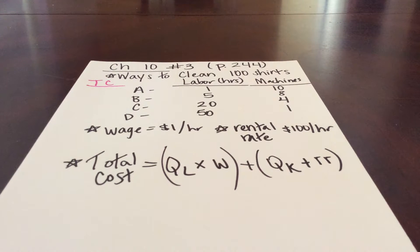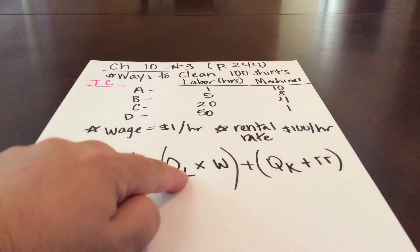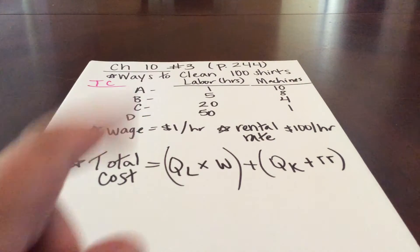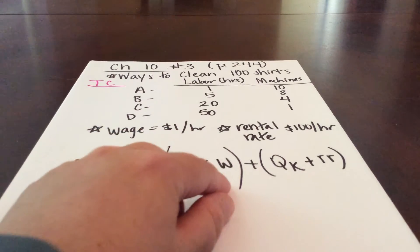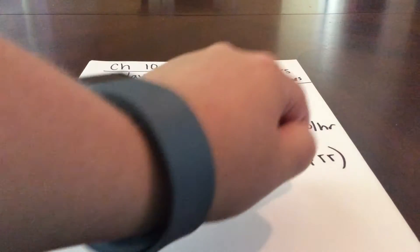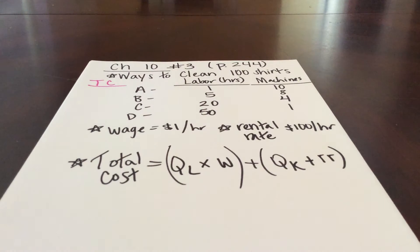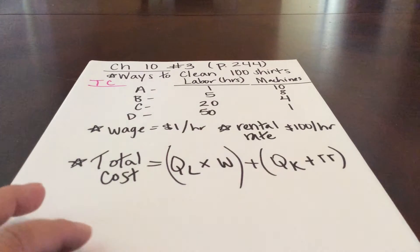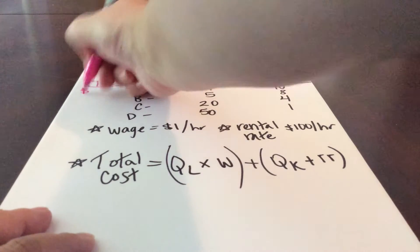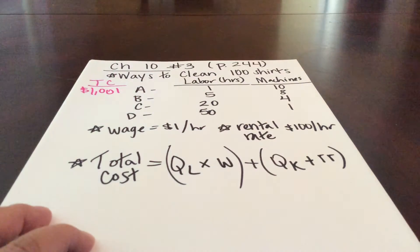For option A, we would have a quantity of labor of 1 times the wage of $1 per hour, plus a quantity of capital of 10 times the rental rate of $100 per hour. So 10 times 100 is $1,000, plus 1, which gives us a total cost of $1,001.